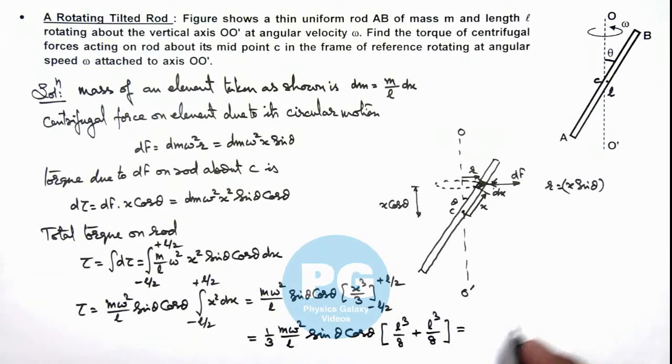On solving we get 1 by 12 m omega square l square sine theta cos theta, which is the result.